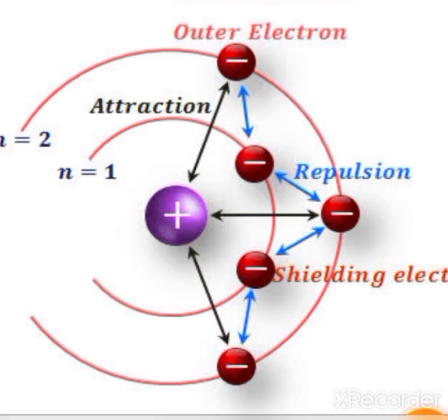Regarding the shielding effect or screening effect: in the atomic structure, in the middle part there is the nuclear charge — the effective nuclear charge — and in the outer part there are electrons.